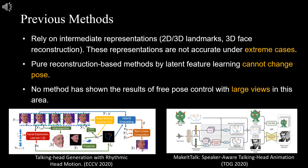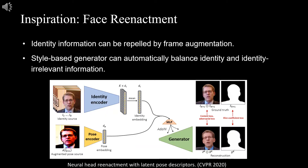While there are a number of studies tackling the task of talking face generation, a few problems remain. Many of these methods rely on intermediate representations such as 2D or 3D landmarks, which can be inaccurate under extreme cases. On the other hand, pure reconstruction-based methods can rarely change poses. Moreover, no method has shown results of free post control under large views.